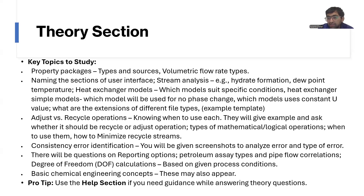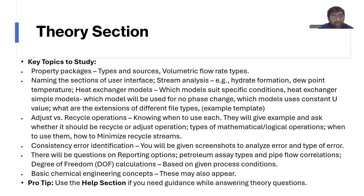There will also be questions on reporting options — how many reporting options are there, how many petroleum asset types are there — and questions related to pipe flow correlations. There will also be questions on degree of freedom calculations based on given operating conditions. For example, they will give you a distillation column with available data and ask how many degrees of freedom there are. Certain questions can also be based on basic chemical engineering concepts.